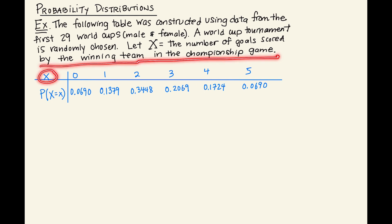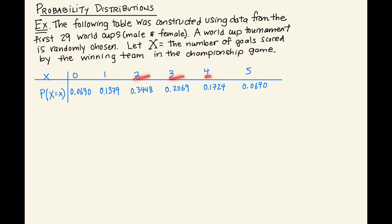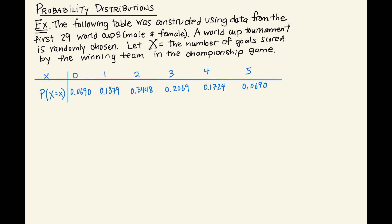The values of X are: zero goals scored, one goal, two, three, four, or five. In the probability distribution, we see that if we randomly selected one of the 29 tournaments, these are the probabilities that the team would have scored zero goals, one goal, et cetera.